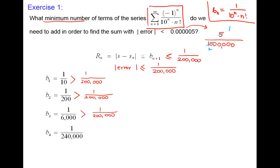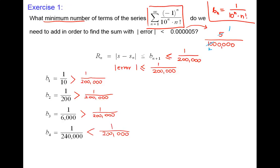Let's check B sub four. B sub four is one over 10 to the fourth times 4 factorial — that's one over 10,000 times 24, which is one over 240,000. Since 240,000 is greater than 200,000, the whole fraction is smaller than one over 200,000. So B sub four satisfies the inequality.